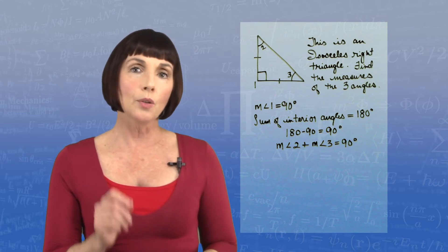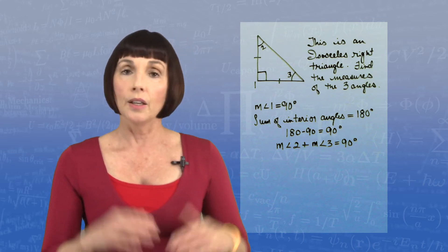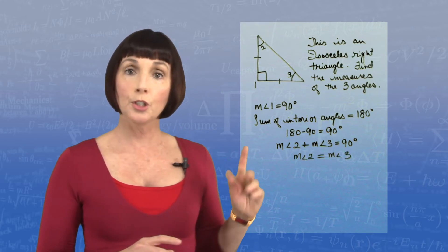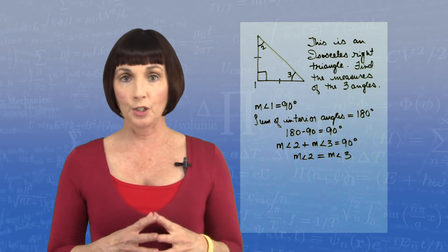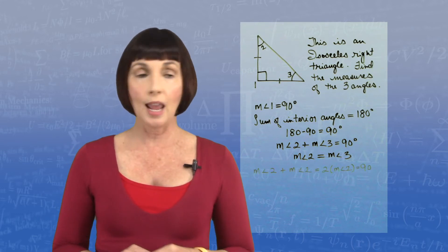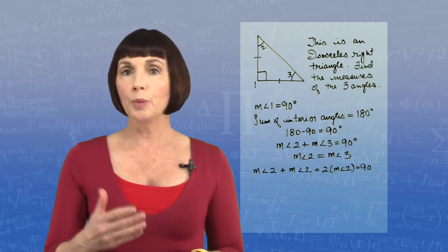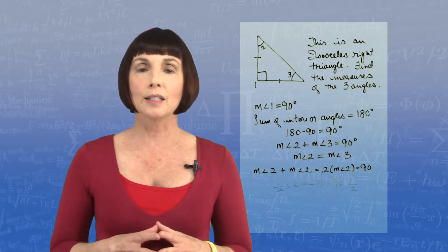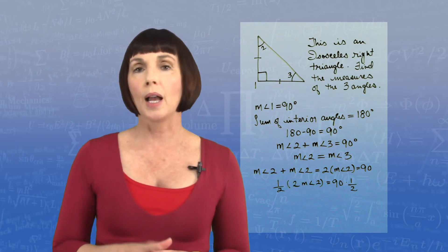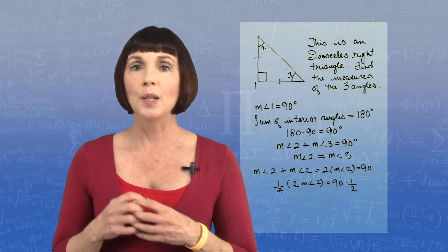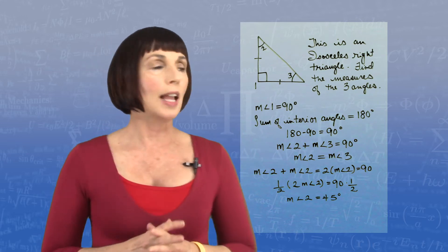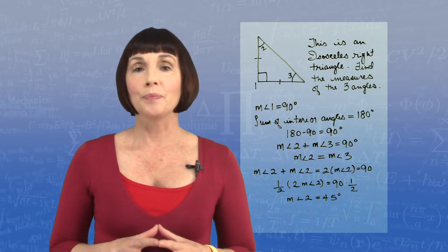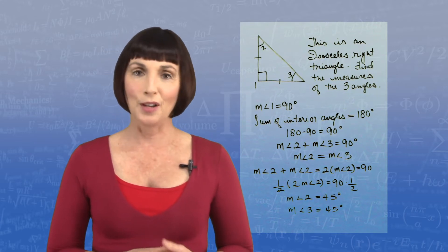Now this is also an isosceles triangle, meaning that the legs and the other two interior angles are equal to each other. So the measure of angle two equals the measure of angle three. We can rewrite our equation as two times the measure of angle two equals 90 degrees. Multiplying both sides by one-half, we get that the measure of angle two equals 45 degrees, and therefore the measure of angle three is also equal to 45 degrees.